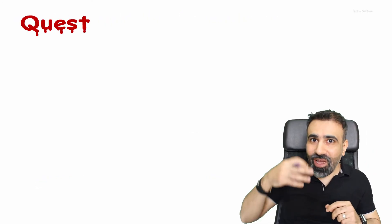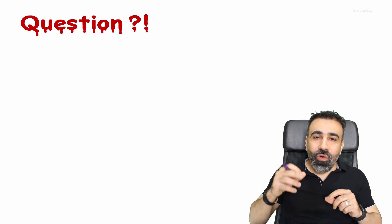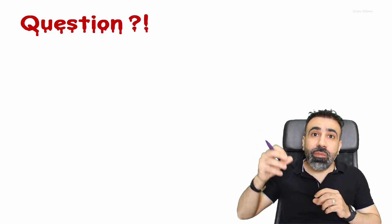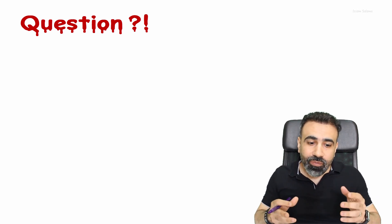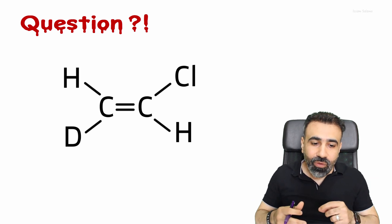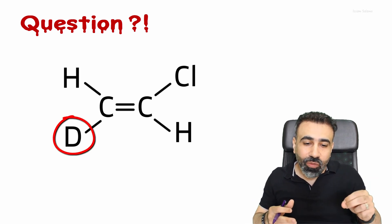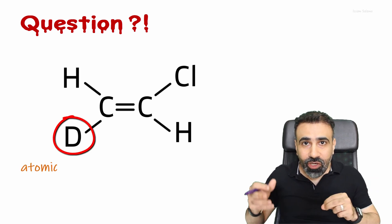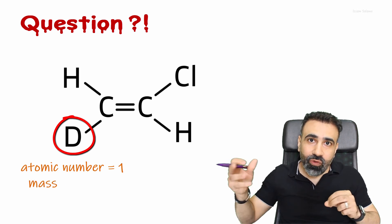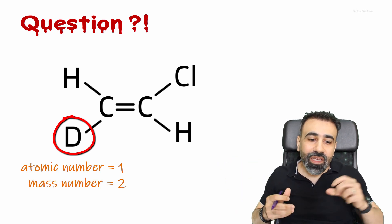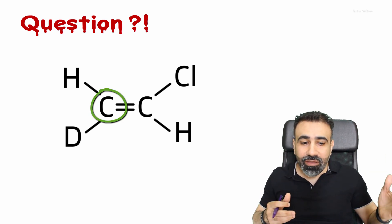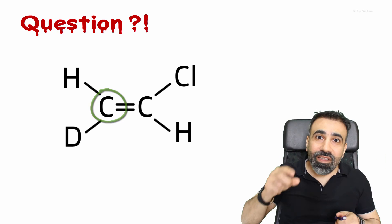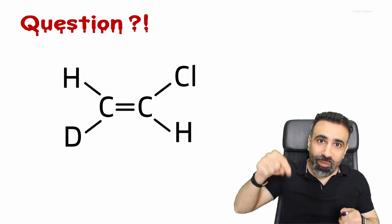Now it's my turn to ask you a question. What if the two atoms attached to one end of the double bond have the same atomic number — is this possible? Yes, if we have an isotope. For example, D is an isotope of hydrogen with atomic number 1 and a mass of 2 AMU. How would you arrange the two atoms on the left end of the double bond according to their priority? Answer in the comment section.